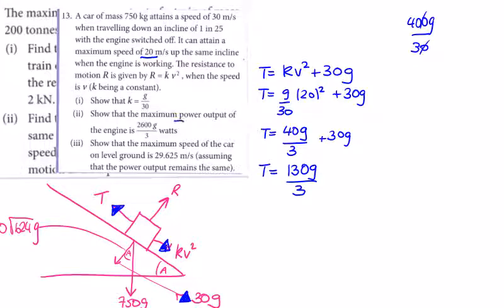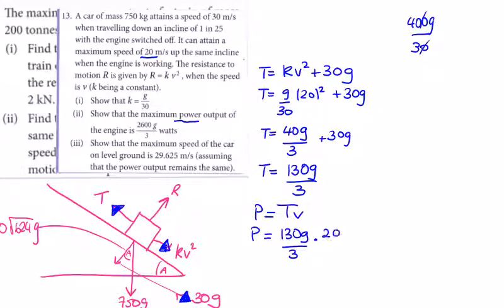We're asked to show the max power. Power equals tractive effort times speed. The tractive effort is 130g/3 and the speed is 20, giving power equals 130g/3 times 20, which simplifies to 2600g/3. That's the required result.